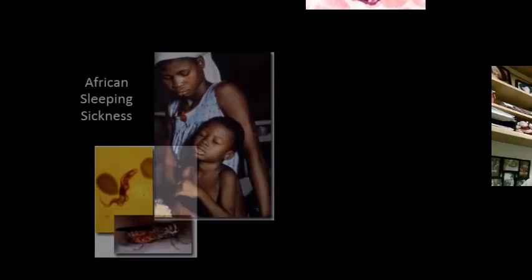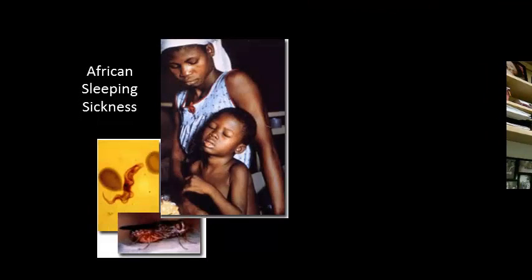African sleeping sickness is the first disease. It's transmitted by the tsetse fly. An affected individual starts to feel run down from fighting the infection, which leads ultimately to a coma and then death. Treatment for this disease is very aggressive and can also kill the individual if the person is too weak.